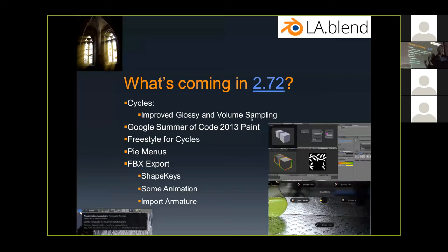The developer of Freestyle is building Freestyle for Cycles. Currently Freestyle is enabled for Blender Internal, the legacy render engine, so we're excited it's going into Cycles, our physically based render engine. Pi Menus are now in trunk — you hit a hotkey and Pi Menus pop up, and you can mouse towards the option you want, so it's more gesture-based. Similar features exist in other packages so people have been missing this — they're really excited about it.